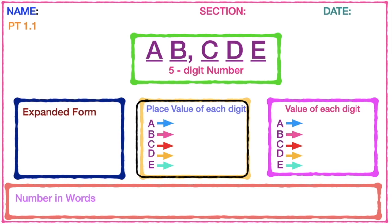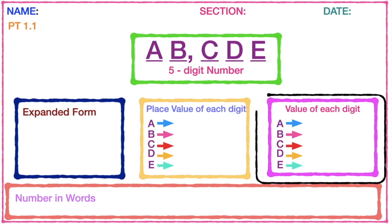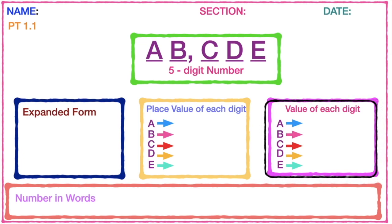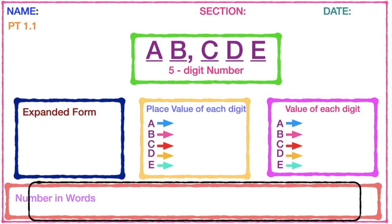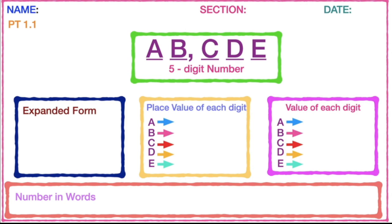For example, your 5-digit number is A, B, C, D, and E. You're going to give the place value of A, the place value of B, the place value of C, the place value of D, and the place value of E. Then give the value of each digit. Lastly, write the 5-digit number in words — don't forget the use of comma and hyphen.